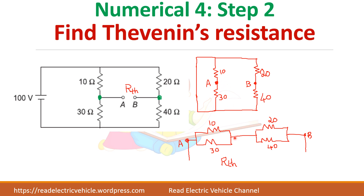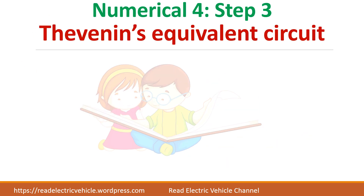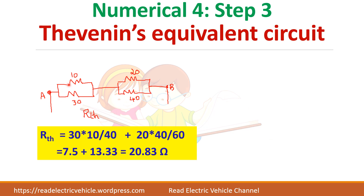For understanding I have drawn these many steps, but actually there is no need — you can just do the calculation easily. This and this will be in parallel, this and this are in parallel, and the combination will be in series for Wheatstone bridge. So simplify it: 30 into 10 divided by 30 plus 10 equals 7.5 ohms (40/4 = 7.5 actually 300/40). Then 40 and 20 are in parallel: 40 into 20 divided by 60. So you get the Thevenin resistance.